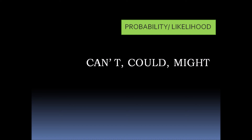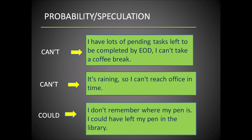The last category of modal verbs implies likelihood, probability, or speculation of an event. The modal verbs used are 'can't,' 'could,' and 'might.' 'Might' is most frequently used as it gives a probabilistic chance of an event happening or not. Example using 'can't': 'I have lots of pending tasks left to be completed by end of day, I can't take a coffee break.' Another: 'It's raining, so I can't reach office in time' — the user is informing his boss that there is a high probability he'll be late.